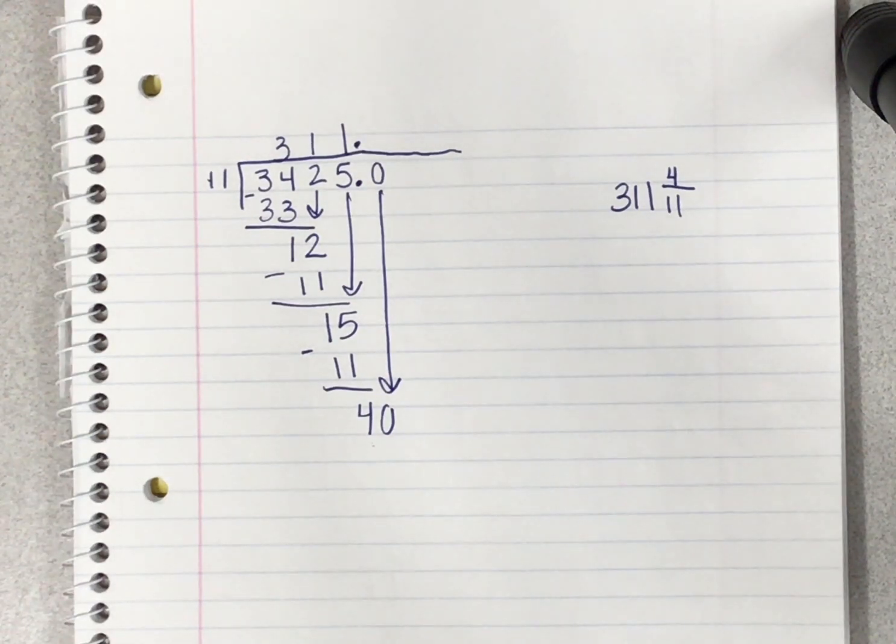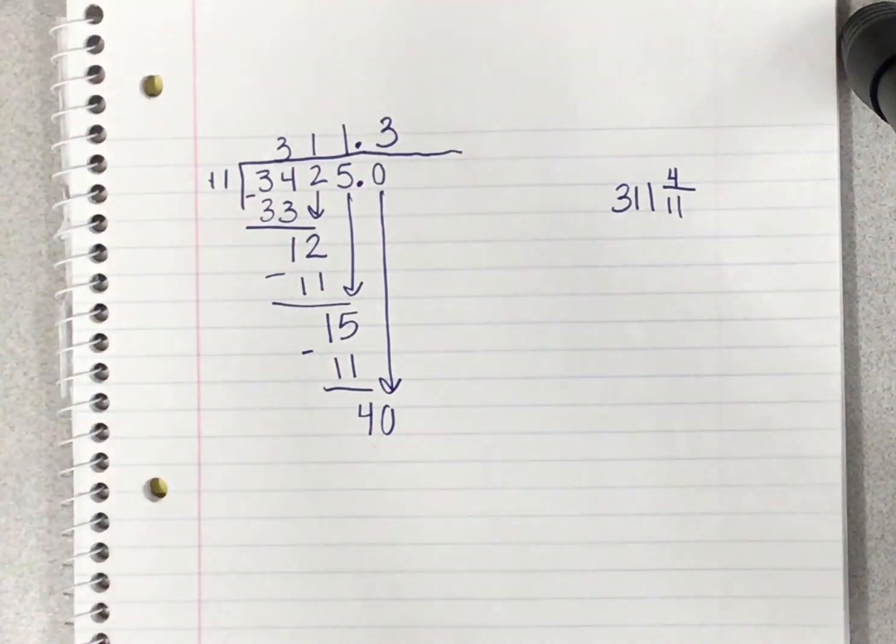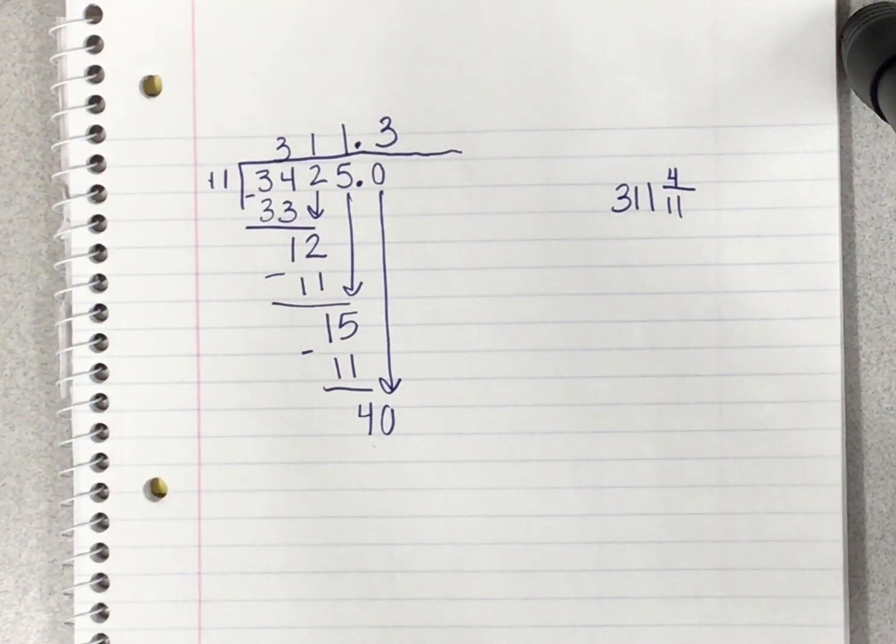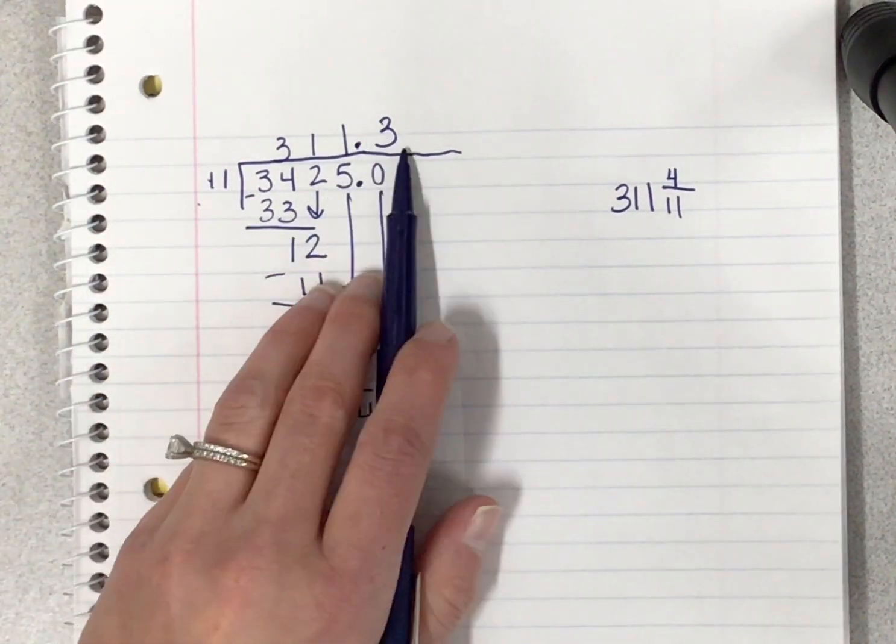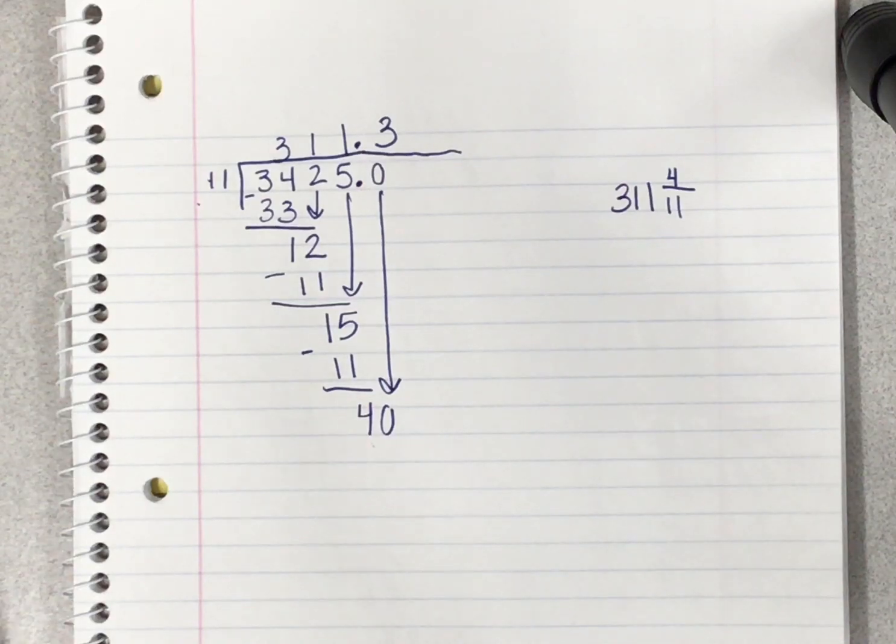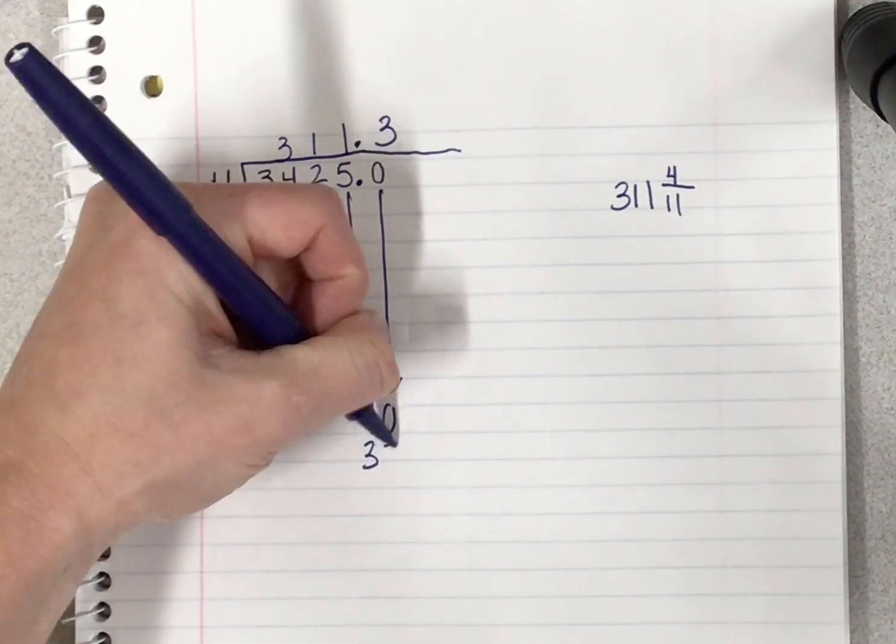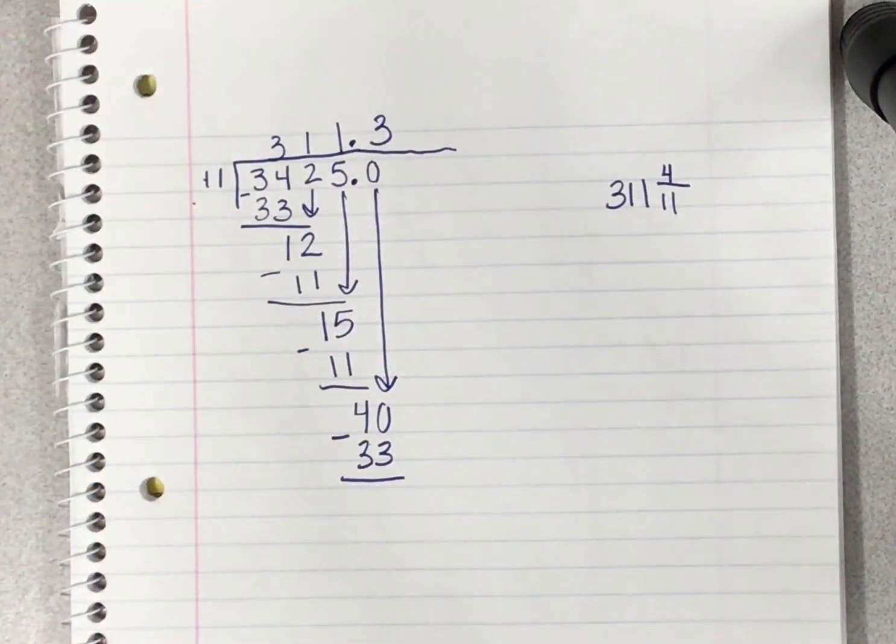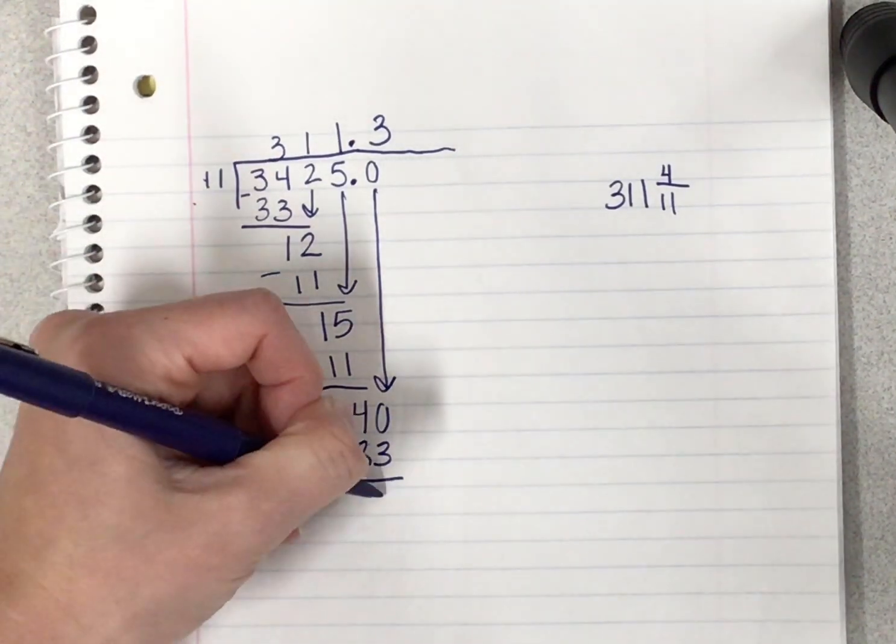11 can go into 40 three times without going over. Place that above your zero. Do that multiplication: 11 times 3 is 33. That goes below my 40 and I subtract. 40 minus 33 is 7.